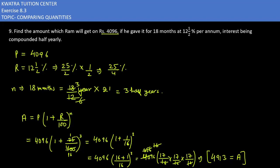This is the amount you are getting: 4913 rupees. So if you invest 4096 for 18 months at 12½% per annum interest being calculated half yearly, you get 4913. You have to halve the rate and multiply the time by 2 to get the time period in half years. This is the final answer for the ninth one.